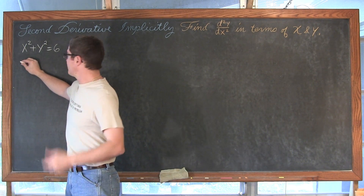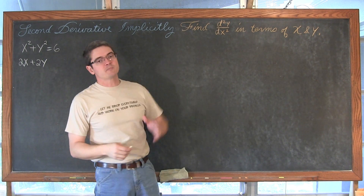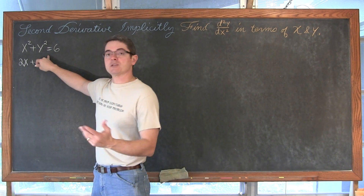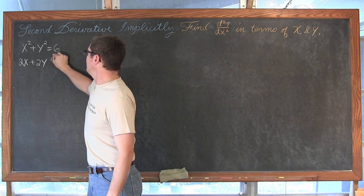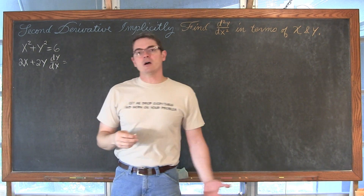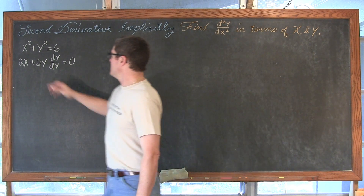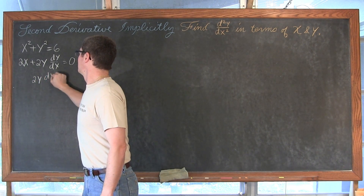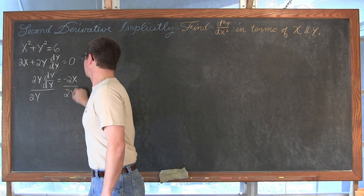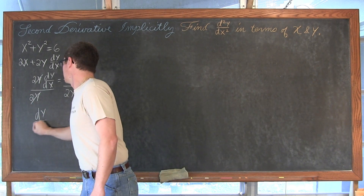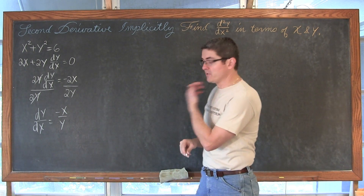Working towards our first derivative, we have 2x plus 2y — and it is not really just 2y, because we are finding the derivative with respect to x, so we have to follow the chain rule. We have 2y, bring that exponent down by one, then multiply by the derivative of the inside function, which is dy over dx. The derivative of a constant is zero. We want to get dy over dx alone, so we subtract both sides by 2x, cancel the 2's, and end up with negative x over y as our first derivative.